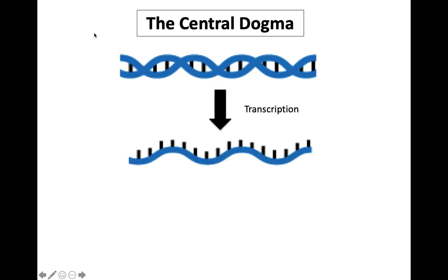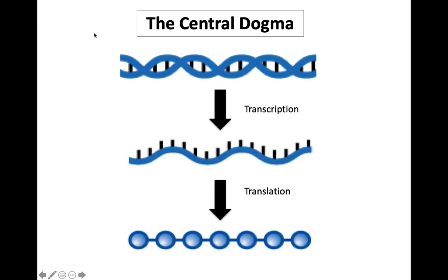An important concept in genetics is known as the central dogma, which states that genetic information is stored in the DNA. DNA can be transcribed into RNA, which can then be translated into proteins.